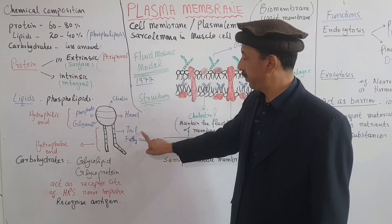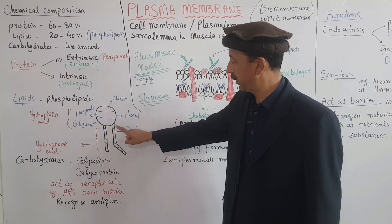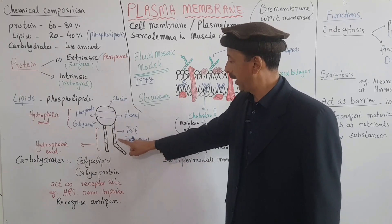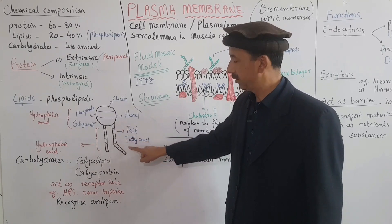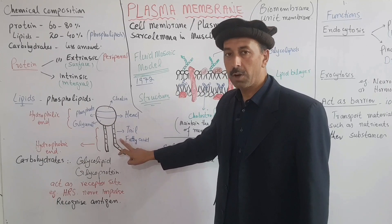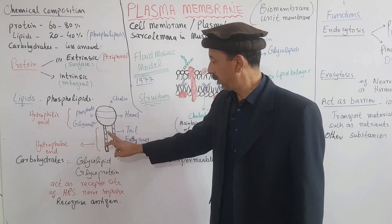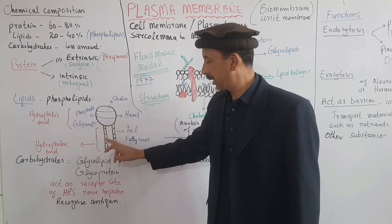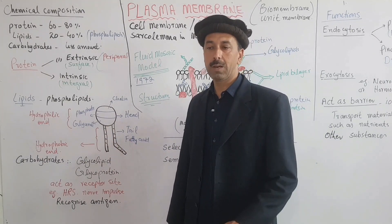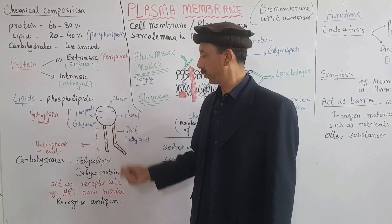The glycerol is the tail region. The tail region is the hydrophobic end, and it is made up of fatty acids. If the fatty acids have double bonds, the lipids are unsaturated; if not, they are saturated lipids.